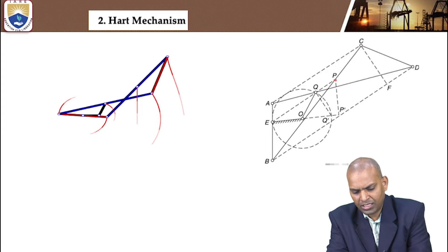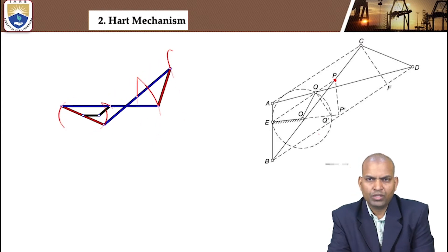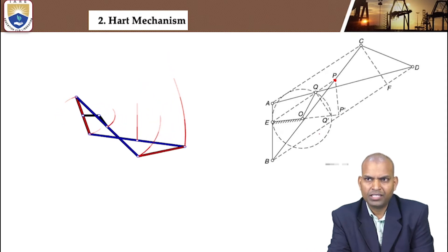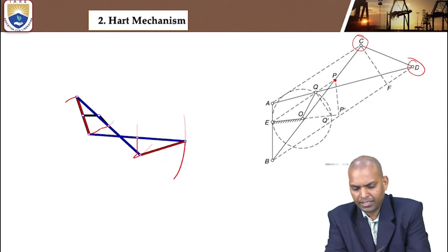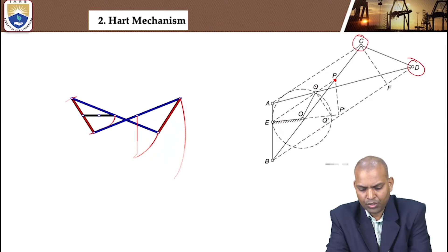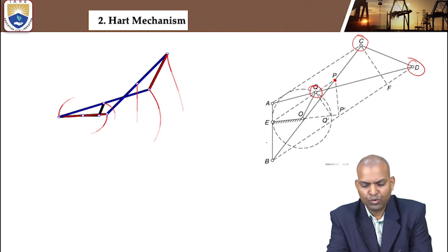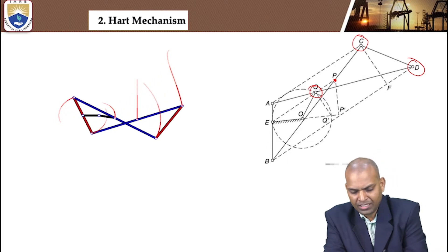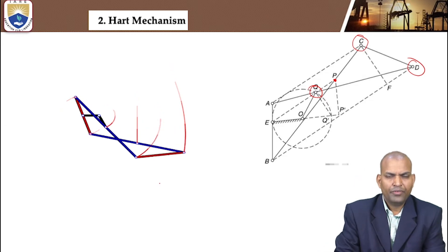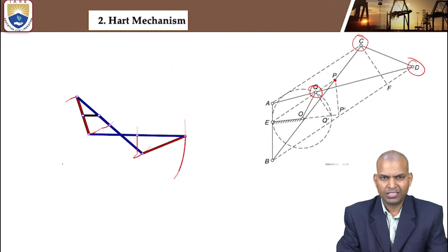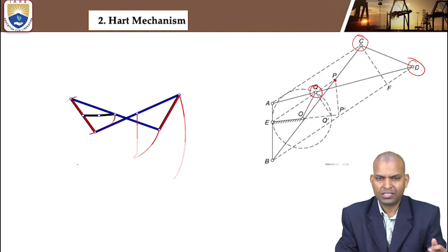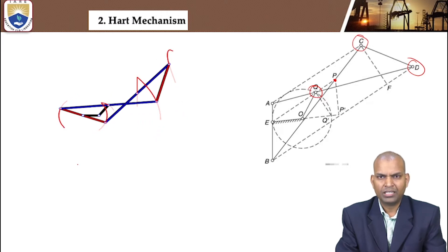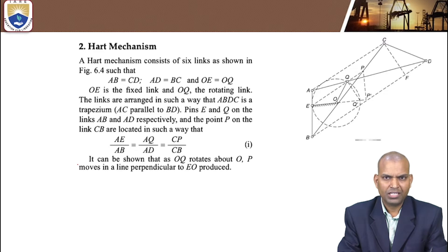Point P gives a straight line even though the path traced by other points such as C, D, Q are moving in different curved lines. But the path traced by point P is a straight line. If you understand the concept of the piece layer mechanism, we have to understand the same geometry concepts for this mechanism, so we can prove that the path traced by point P is a straight line.